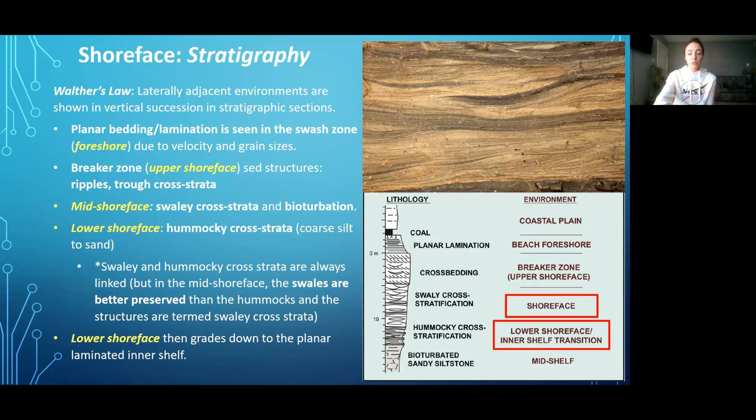Swaley and hummocky cross-stratification are always linked, but in the mid shoreface, swales or depressions are better preserved than the hummocks. Hummocky cross-stratification preserved in the lower shoreface typically preserves both the hummocks and swales. The lower shoreface then grades down to planar lamination with bioturbation in the offshore zone.